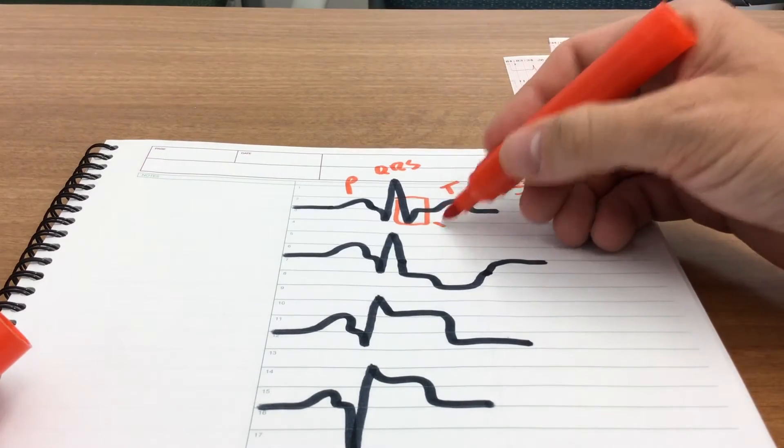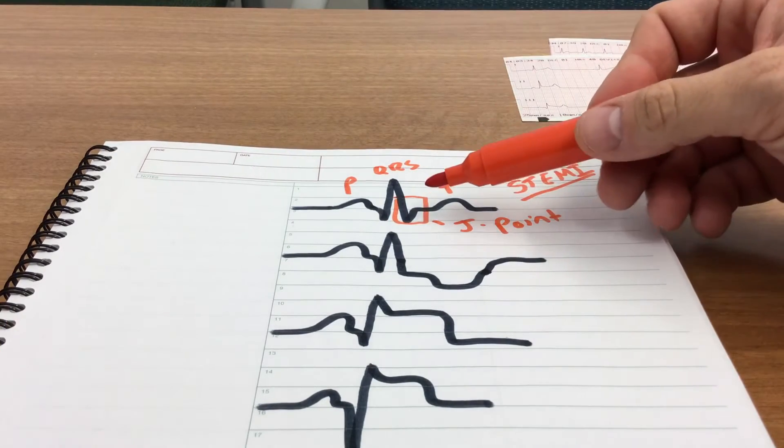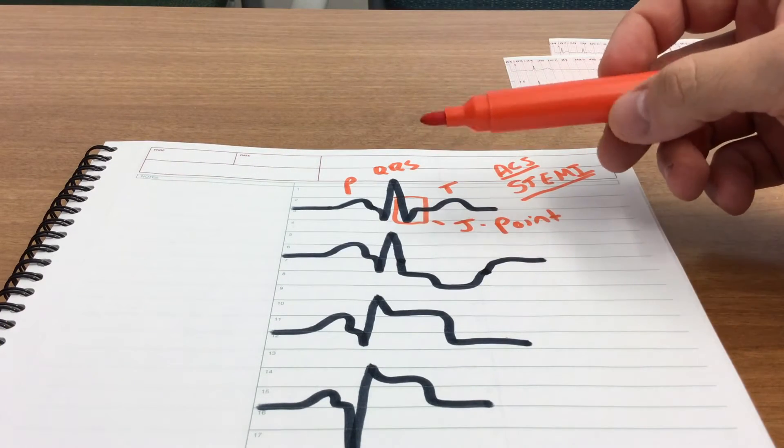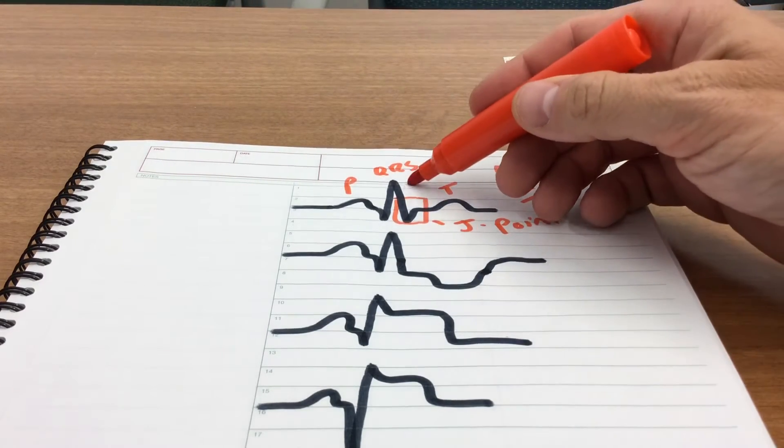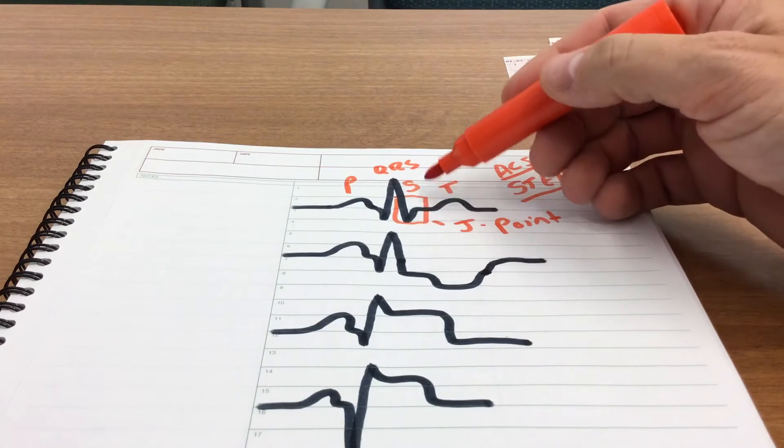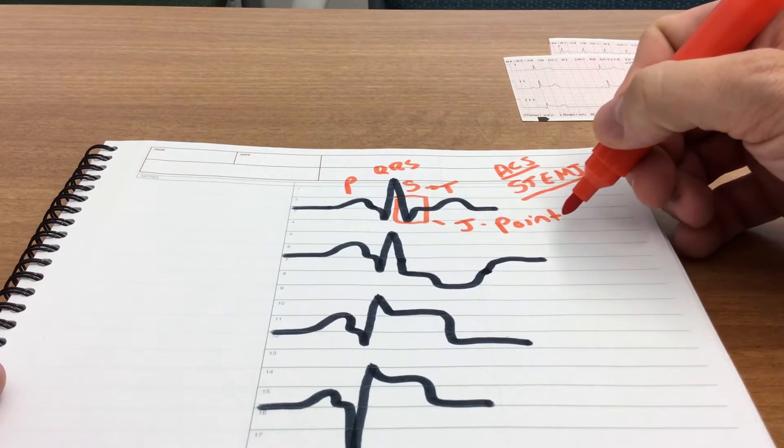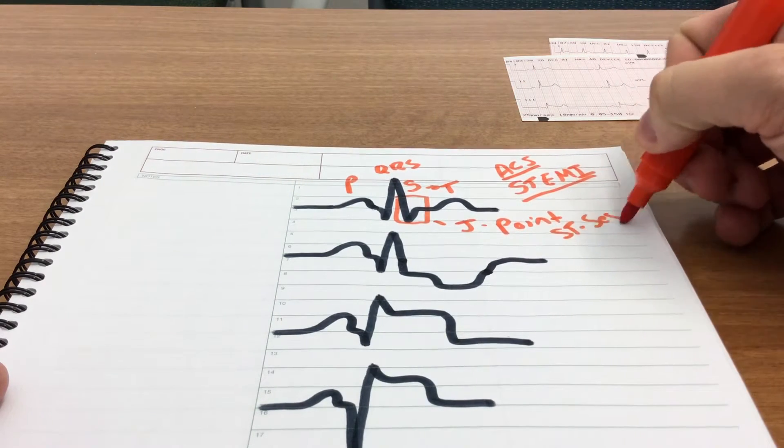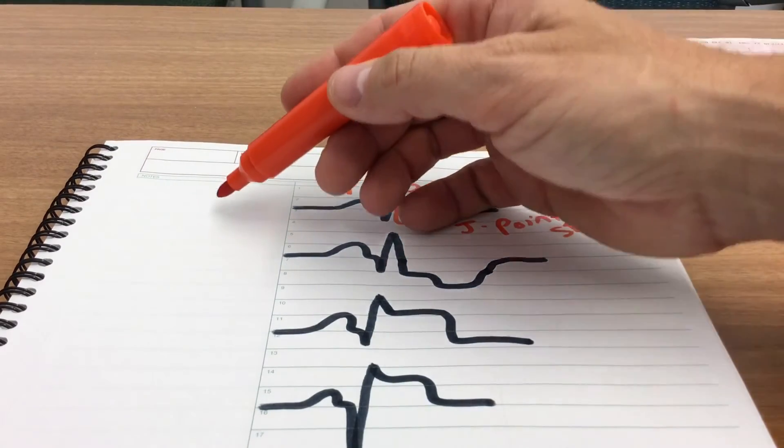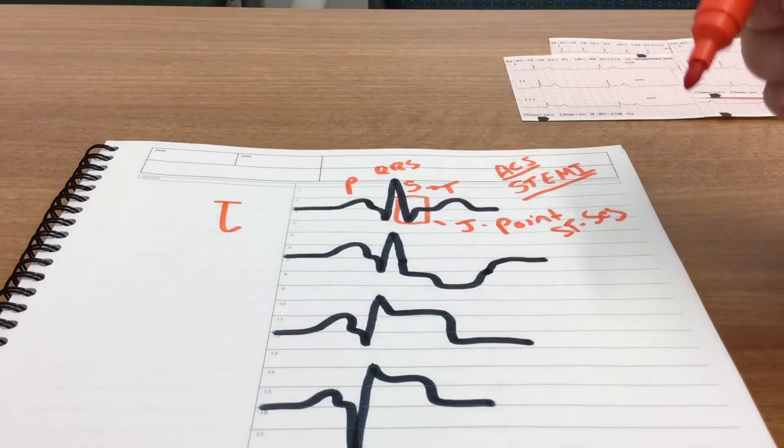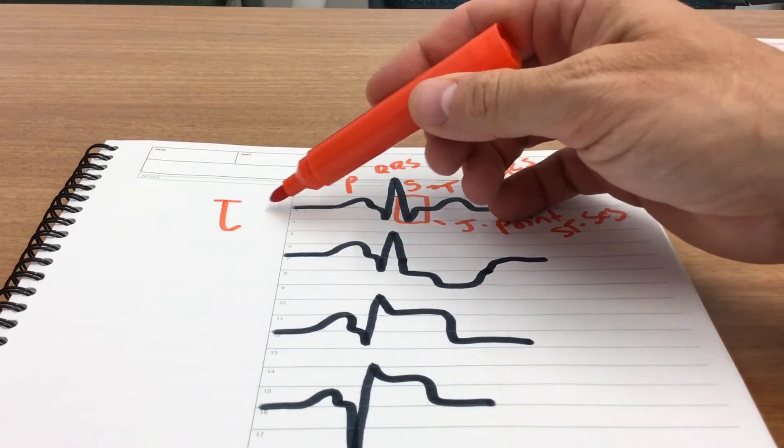This is known as the J point, and that's where we start our basic analysis if we're looking for ST segment abnormalities. The J point is where our S wave terminates and we transition into the T wave. This is also known as the ST segment. If you look at the J point, it does kind of resemble a J, right, just like that.